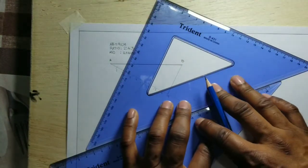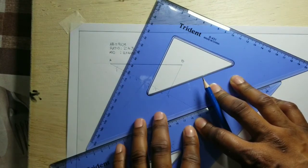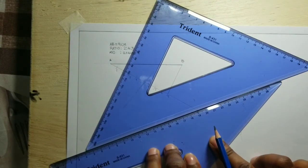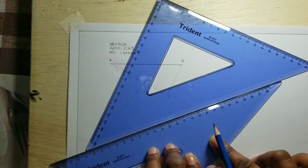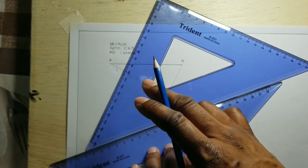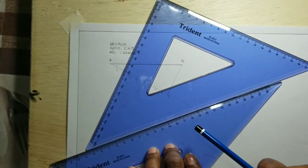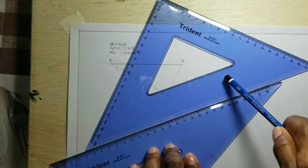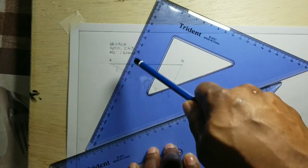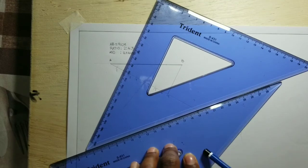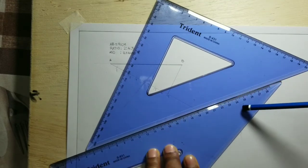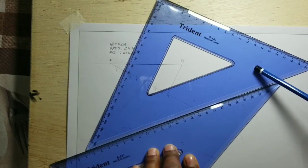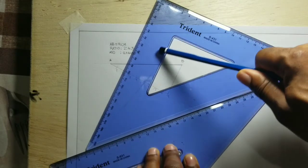Now please note, you cannot move this second set square, else the ratio will be inaccurate. This is the only set square that we will move along this edge. So along this set square's edge we will slide this first set square. Let's call this set square, set square A.